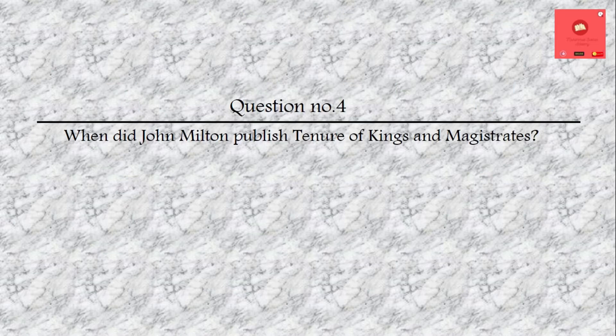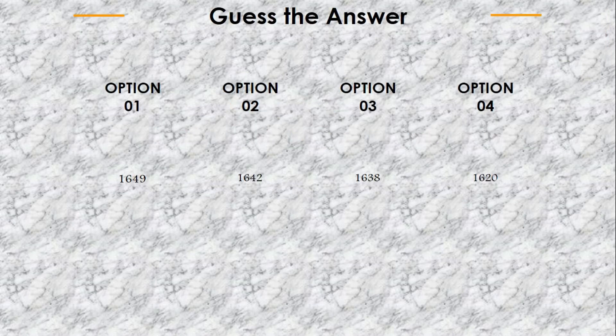Question number 4: When did John Milton publish Tenure of Kings and Magistrates? Options are: 1964, 1649, 1642, 1638, or 1620. The answer is 1649.